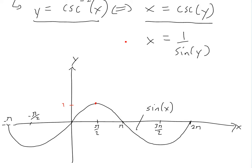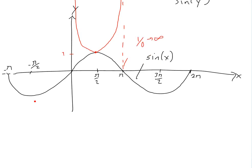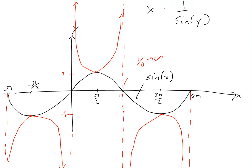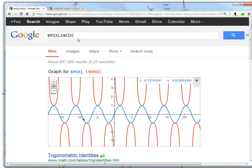Wherever sine equals 0, there's an asymptote for cosecant, because you'd have 1 divided by 0, which goes to infinity. So the cosecant curve shoots up to infinity at those zeros. Similarly, where sine equals negative 1, cosecant is also negative 1, and then it goes to negative infinity at the zeros. I've verified this in Google by plotting sine x and cosecant x — the blue is sine x and the red shows cosecant with asymptotes wherever sine is zero.